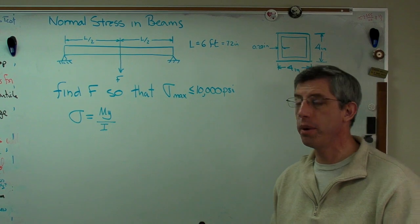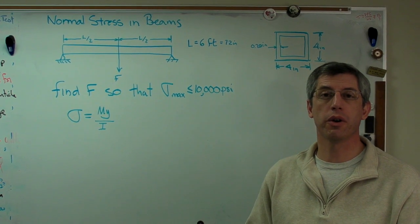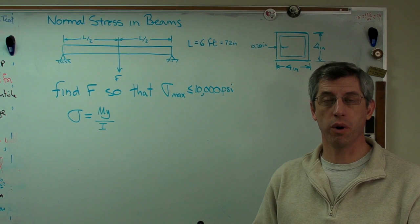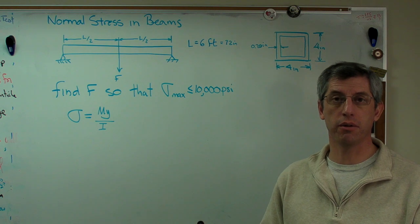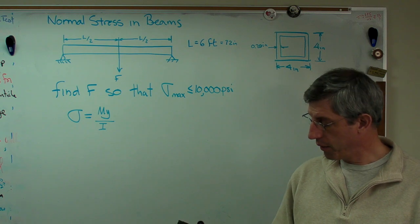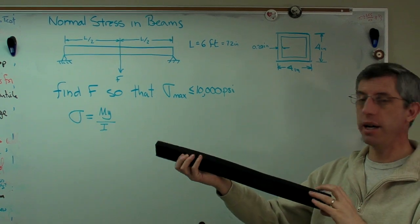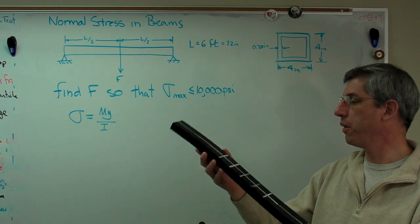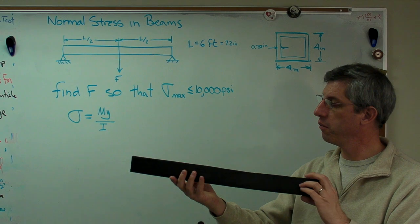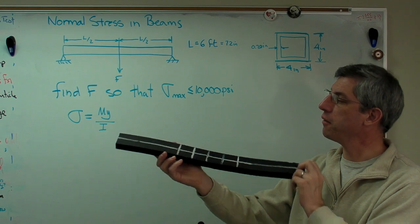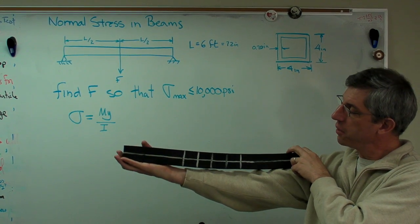One other thing I want to talk about before we go too much further is curvature and where the stresses are positive or negative in the beam. I've got another example here. This is a beam cut out of some heavy foam rubber that was originally part of a floor pad, I think, that I salvaged out of the trash can. I've painted some lines on it.